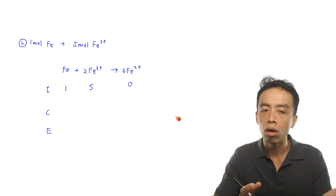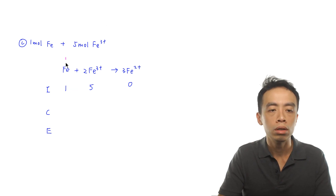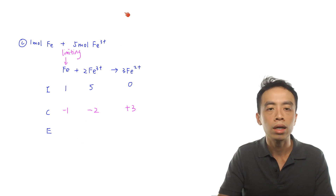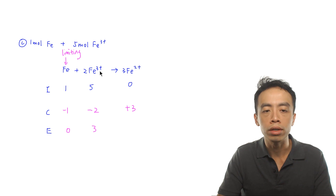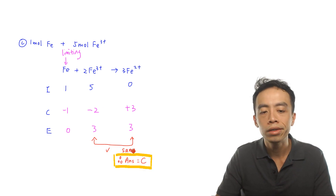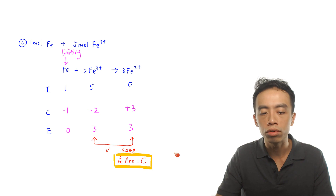For option C: 1 mole of iron and 5 moles of iron 3+. Iron is again the limiting reagent. The change row is −1, −2, +3. At the end: 0 moles iron, 3 moles iron 3+, and 3 moles iron 2+. The amount of iron 3+ and iron 2+ is exactly the same — 3 moles each. This is exactly what the question requires, so the answer is option C.